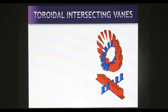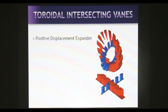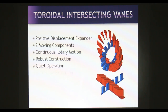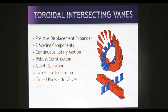By carefully designing the shapes and placement of the vanes, it is possible to create an expander that accomplishes several goals. We have made a positive displacement expander that operates with only two moving parts — each part spins concentrically and continuously. The toroidal geometry allows for very robust construction and operates quietly. The expander can operate with two-phase fluids if needed, uses ports instead of valves, is self-starting, and is oil-free.